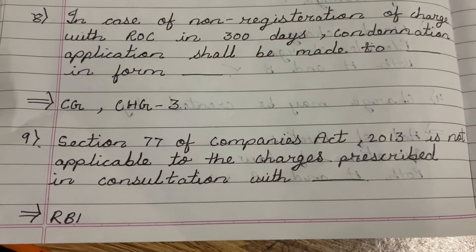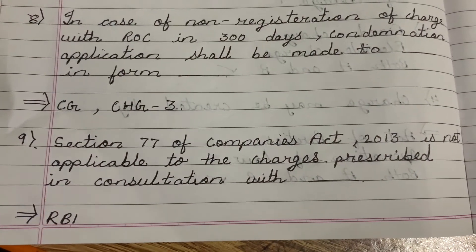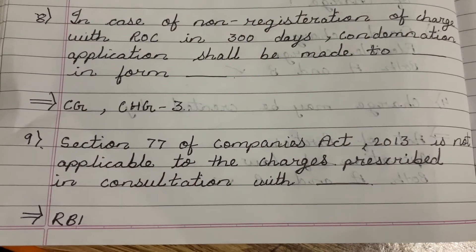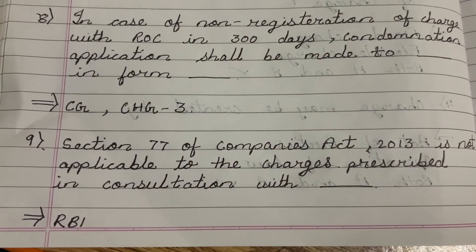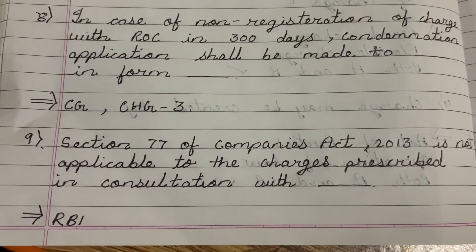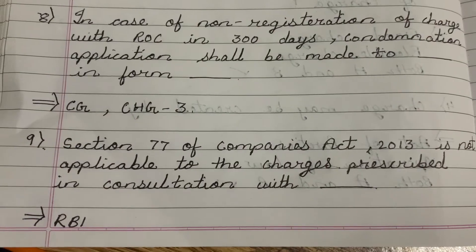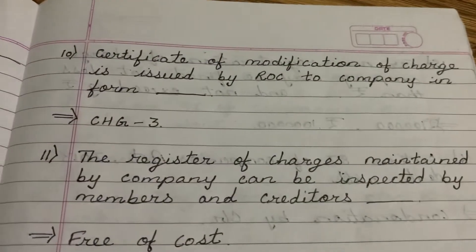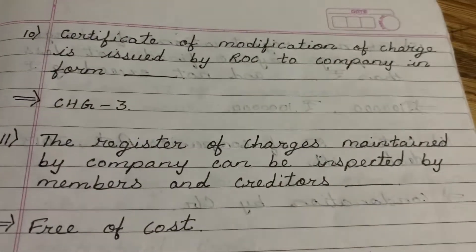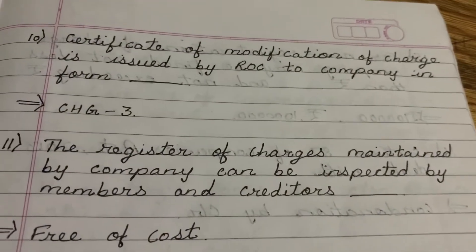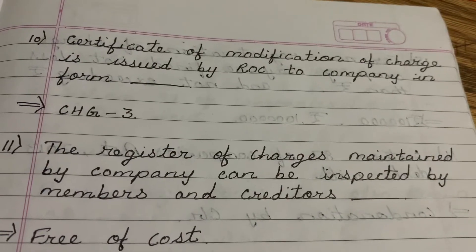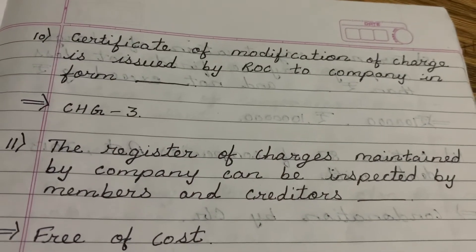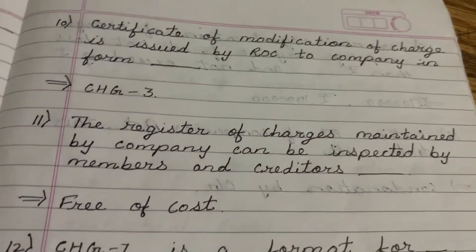Section 77 of Companies Act 2013 is not applicable to the charges prescribed in consultation with RBI. The Certificate of Modification of Charge is issued by the ROC to the Company in Form CHG-3.